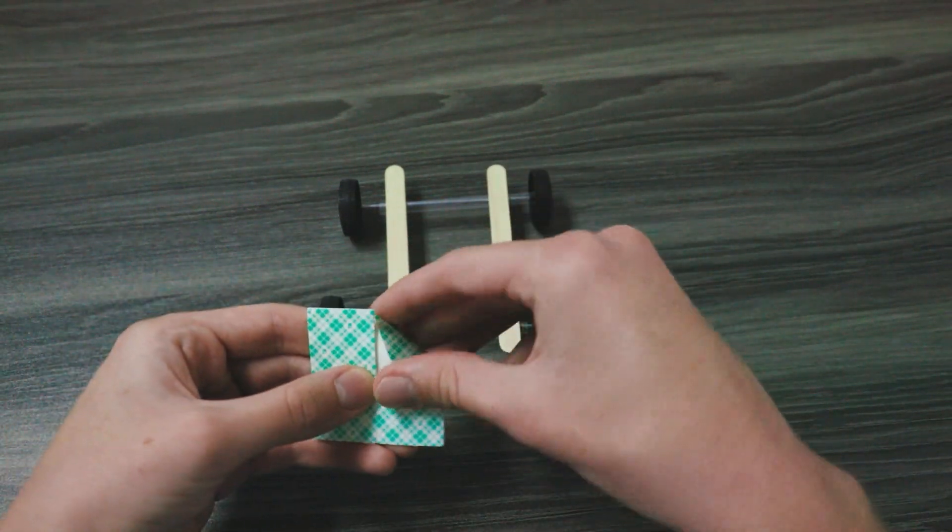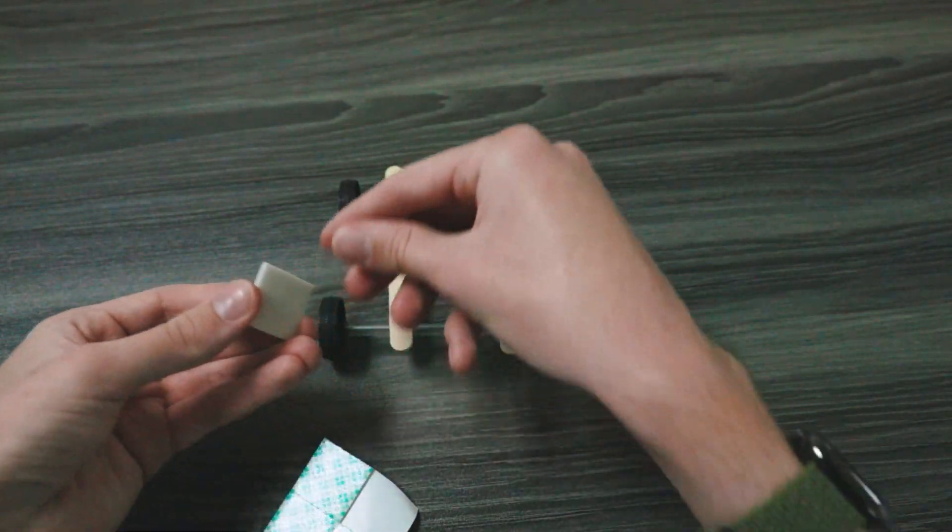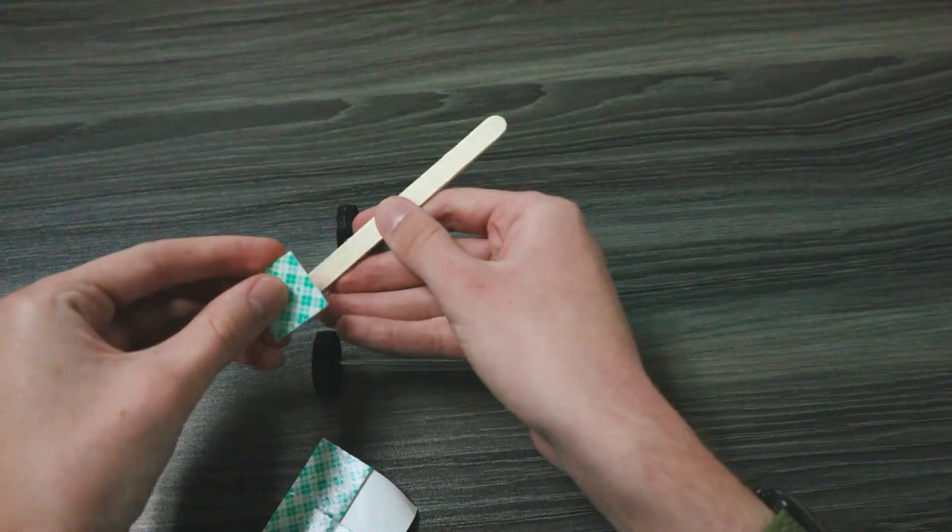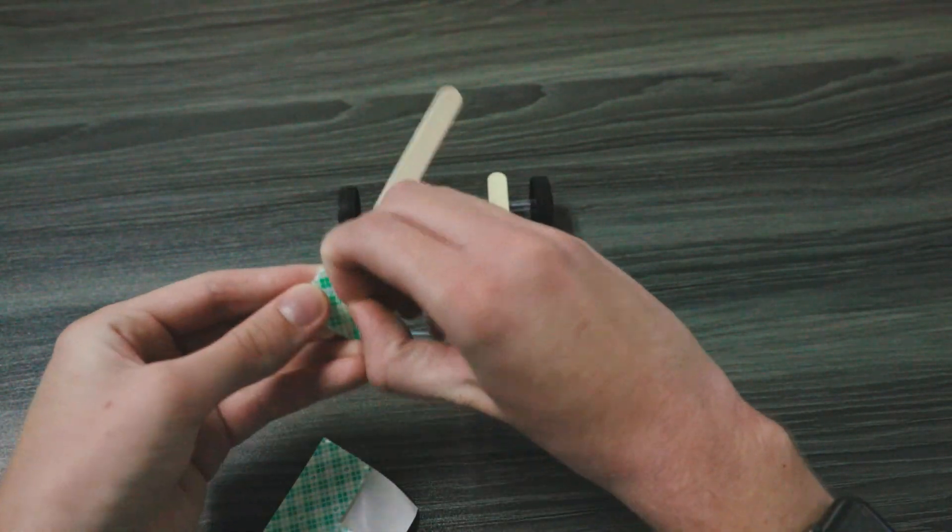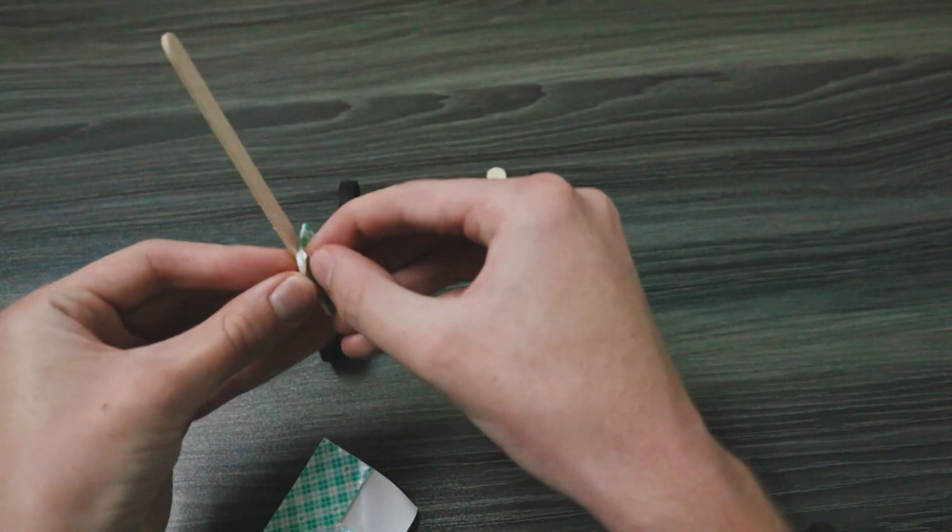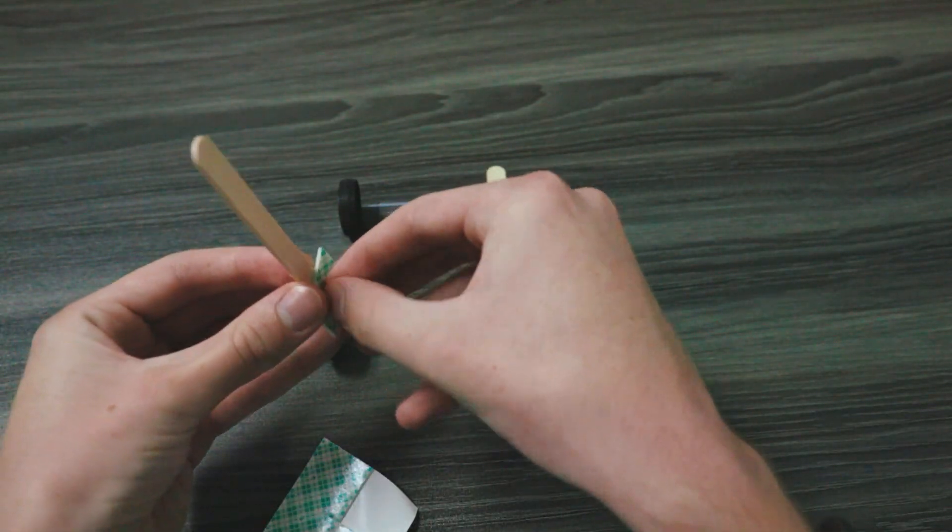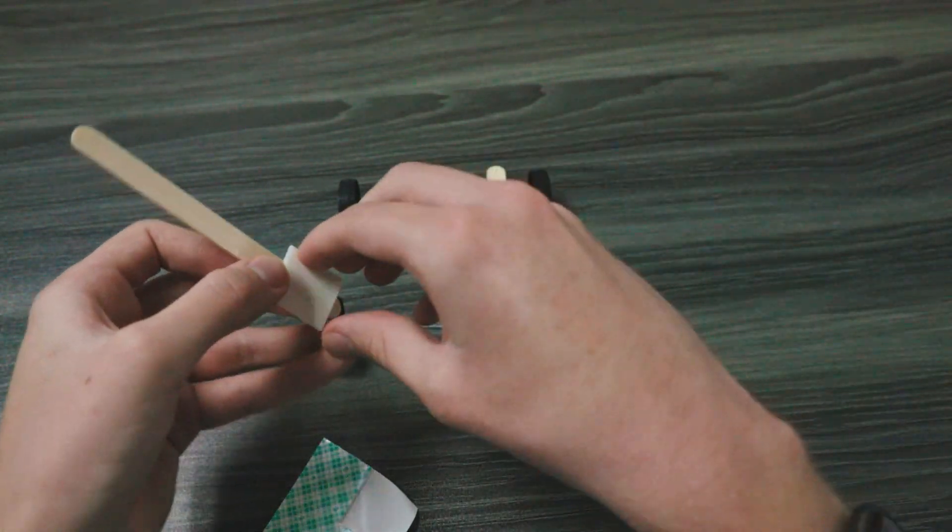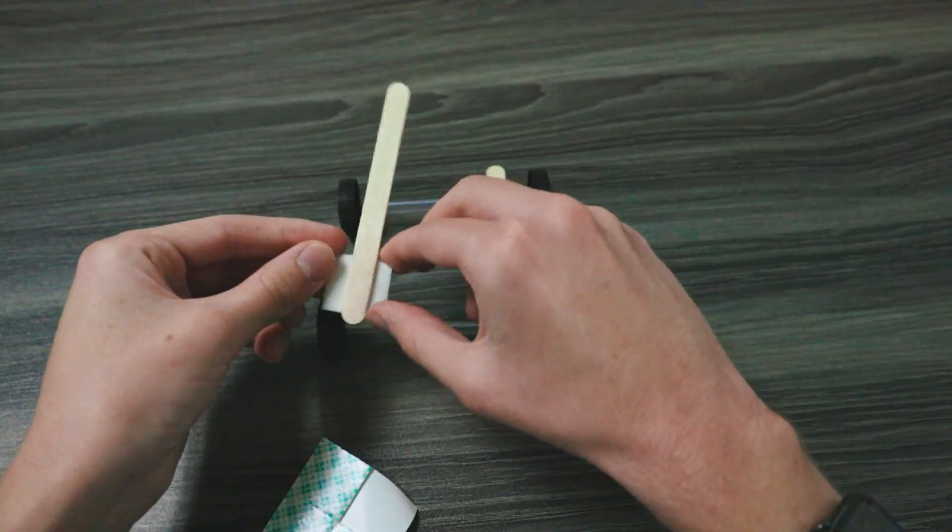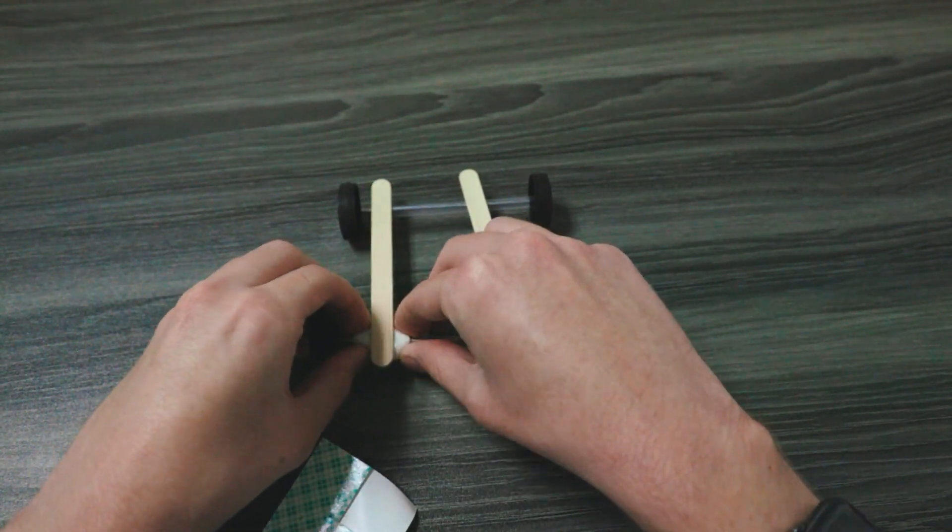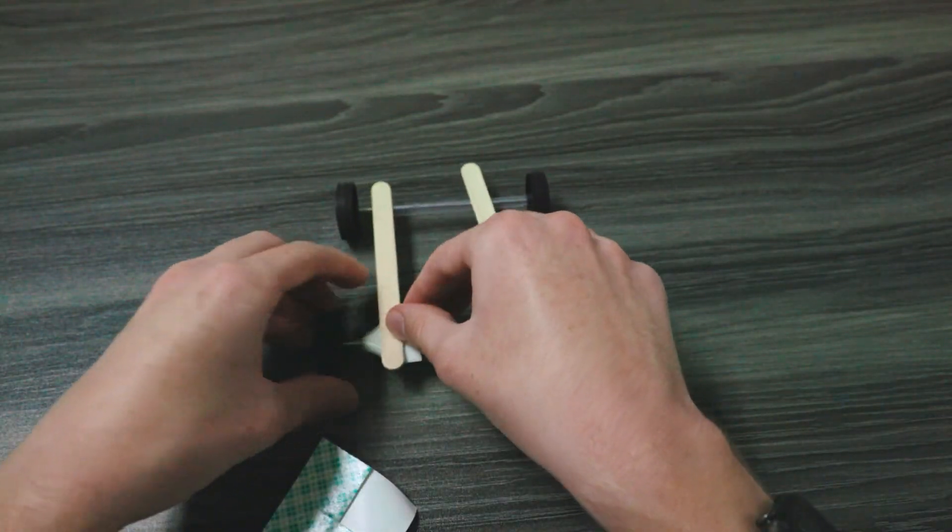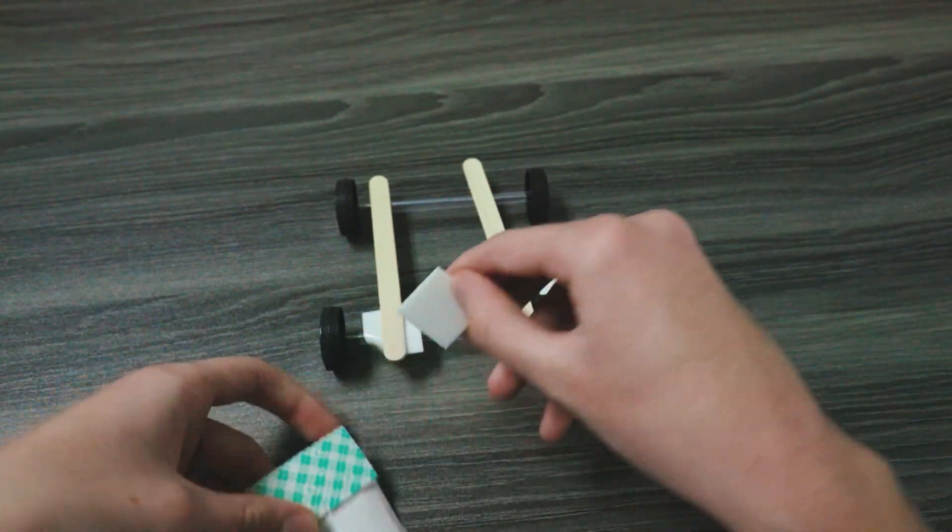So I'll do that now with some double-sided squares. It's easiest to place them onto the popsicle stick first, remove the backing, and then place and fold them around the straw. It's important to make sure as well that the double-sided tape doesn't contact the wheel as this could prevent it from spinning.